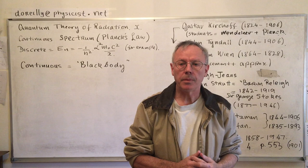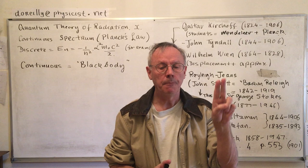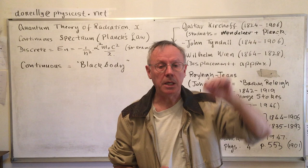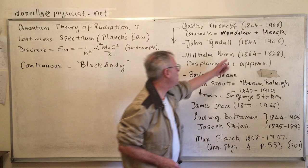Wien's displacement law, which is the derivative set to zero of Wien's approximation. So there are two things with Wien. It begins with Wien's approximation, and then you take its derivative and find the peak of the curve by setting that equal to zero. Rayleigh-Jeans—Rayleigh is not Rayleigh at all, his name is John Strutt, Baron Rayleigh.